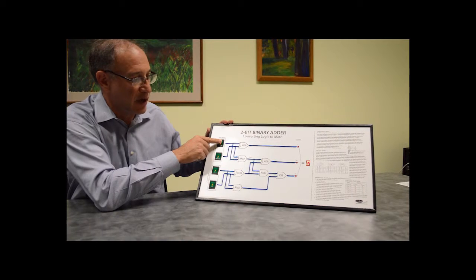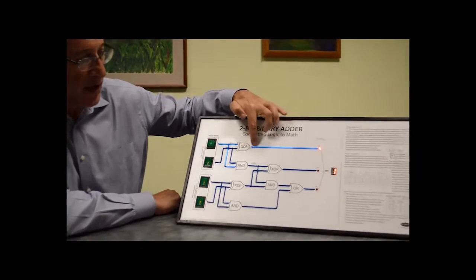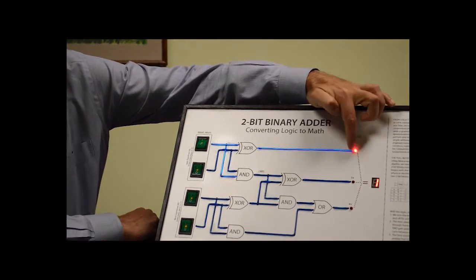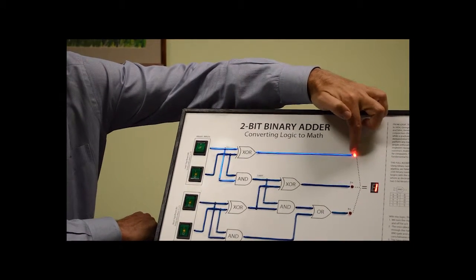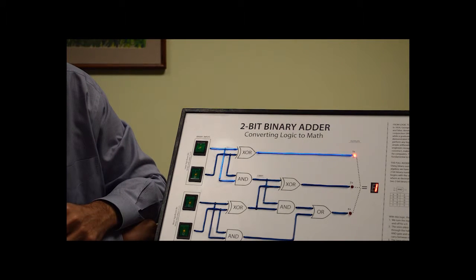So here we're going to turn on a binary 1. That goes through our exclusive OR gate, gives us a binary 1 as an output, so we have binary 1. And for anyone who is binary impaired, we've converted that into a decimal 1.